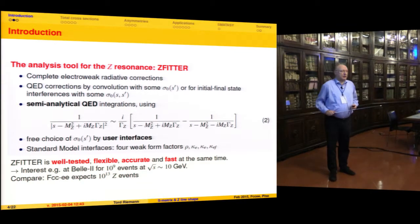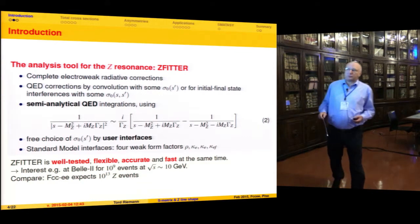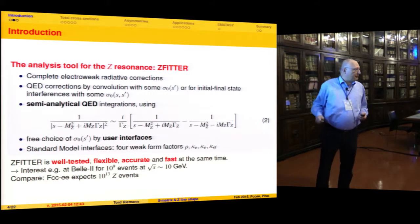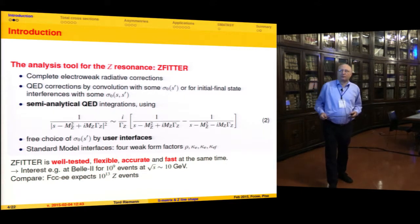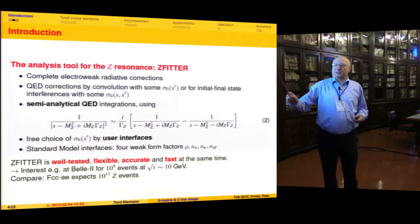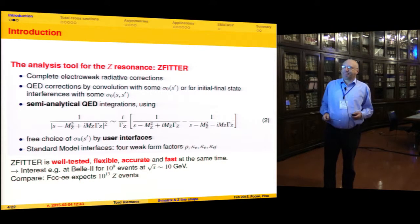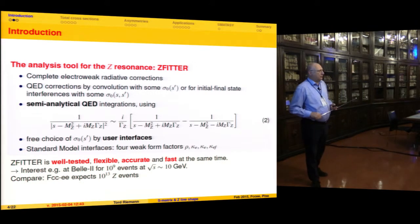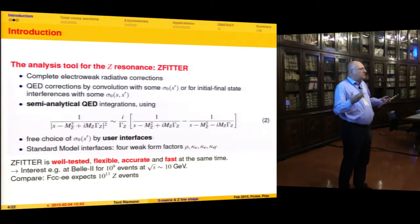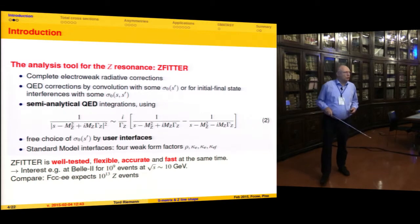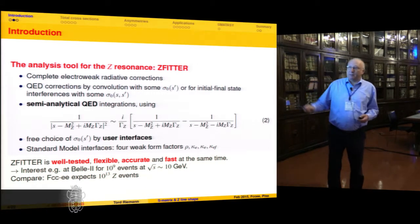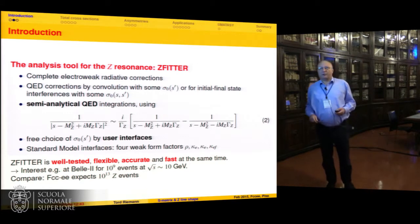Something is behind the fact that you can use the fitter until now: the free choice of this effective born cross-section by writing user interfaces to the fitter. One of them is the S-matrix approach. Let me mention that the fitter is well-tested, flexible, accurate, fast, and is also supported. All these facts are neglected by some colleagues who seemingly do not like the fitter because they have their own code. They copied, by the way, part of the fitter into their code without telling us.